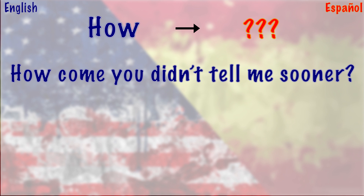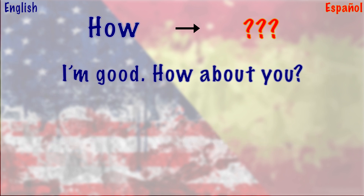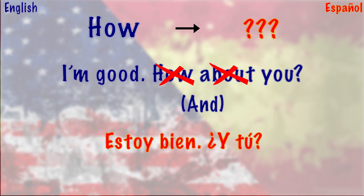'How come you didn't tell me sooner?' — 'how come' in English can simply be changed to 'why,' which translates to 'por qué.' So: '¿Por qué no me lo dijiste antes?' For 'I'm good, how about you?' — the best translation is to simply omit 'how about' altogether. In Spanish, you'd say 'Estoy bien, ¿y tú?'